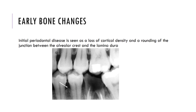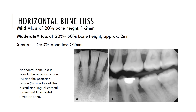Early bone changes in initial periodontal disease are seen as loss of cortical density and rounding of the junction between the alveolar crest and the lamina dura, as shown in the image with the white arrow indicating a rounded cortical edge. This is in contrast to the normal crestal bone which shows a sharp angle with the lamina dura. Horizontal bone loss is bone loss seen in the anterior and posterior regions with loss of buccal, lingual cortical plates and the interdental alveolar bone.